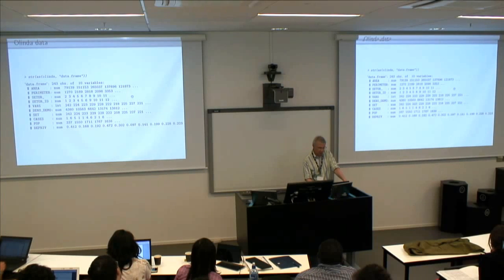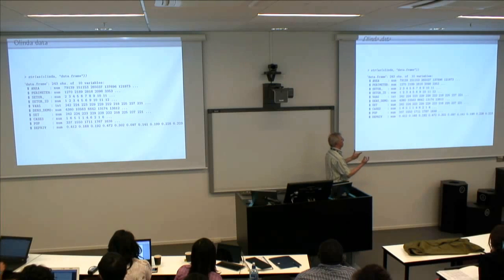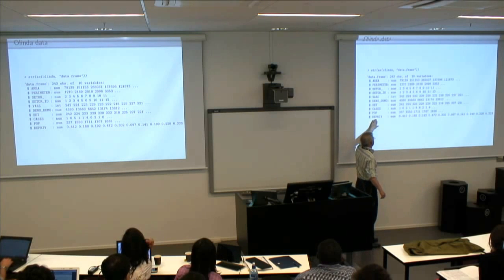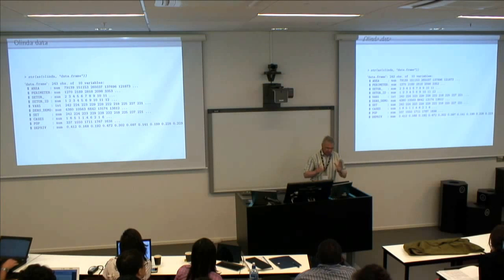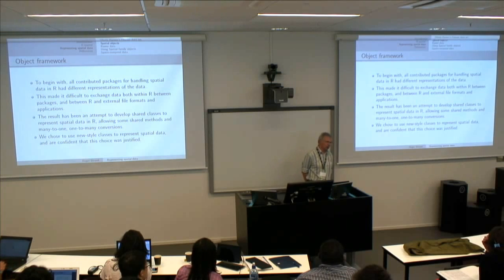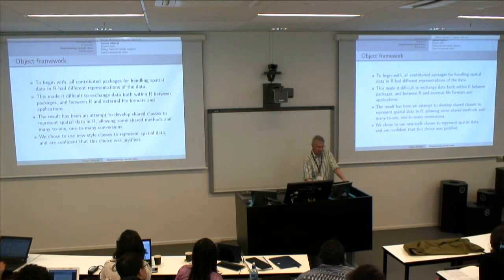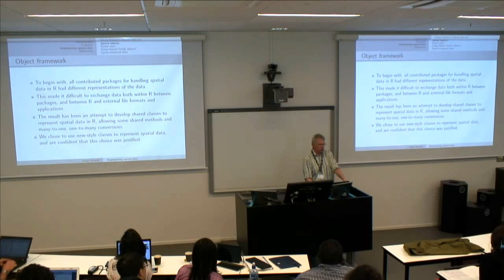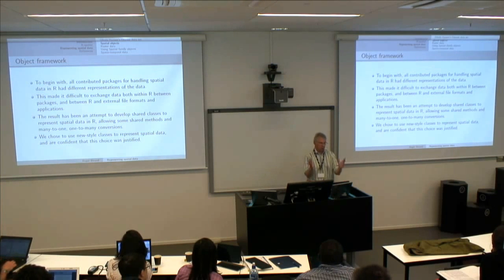The data in R, as in many statistical systems, are stored as rectangular tables — columns are variables, rows are observations — data frames. In R you access columns with the dollar operator. We can look at the spatial polygons data frame we've just read in as though it was a data frame, and it behaves in a completely standard way. When we began 10 years ago, contributed packages dealing with spatial data had different representations, making it difficult to exchange data. We considered it necessary to develop shared classes.